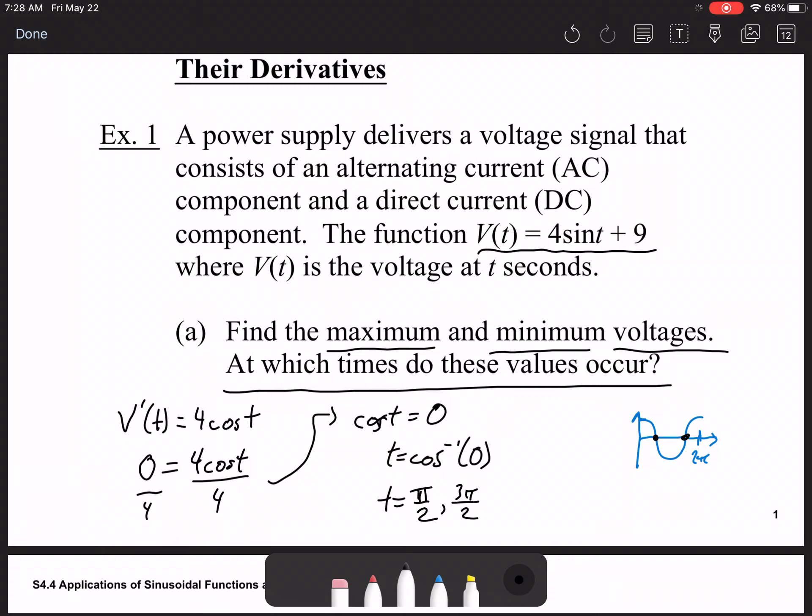Just knowing where the function is zero is all you really need to know about these kinds of problems. You may have to do some other solving, but that's about it. So have we proven that these are maximums or minimums? No, actually we haven't. But we have found the times at which they occur.